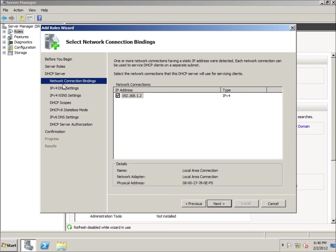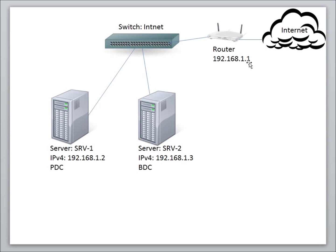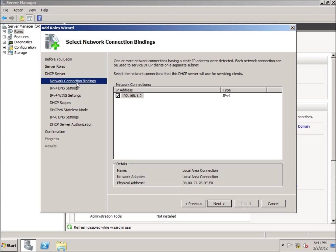The network connection bindings — this is going to be the network adapter that we want to use for our DHCP server. If I take a quick look at our actual topology, we've got a primary server and a backup domain controller already created. What we're going to do is use the 192.168.1.2 connection — it's my only network adapter on the computer at this moment. That is the network adapter that is going to have requests coming in for the DHCP server, so clients are going to ask basically across the network on this line.